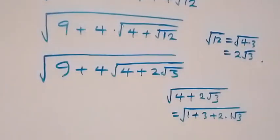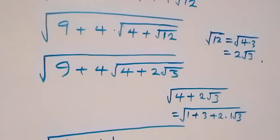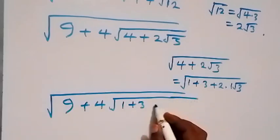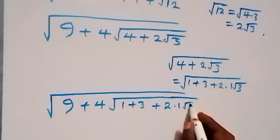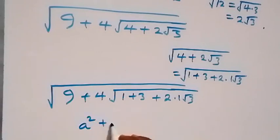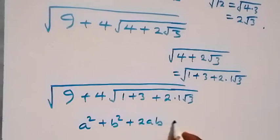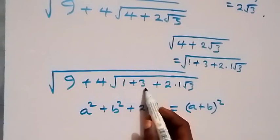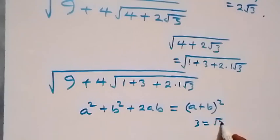So when we replace this with what we have here, this will give us square root of 9 plus 4, then square root of 1 plus 3 plus 2 times 1 times root 3. From here, we can follow from what we have: a squared plus b squared plus 2ab equals (a plus b) squared. Here we can write 1 as 1 squared, and 3 we can write as root 3 squared. So this cancels and this is root 3.